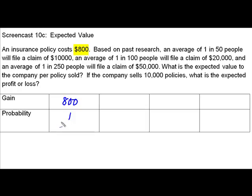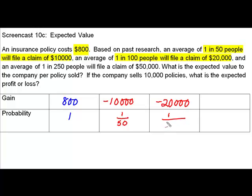Then we are going to move to what they have to pay out. The first scenario is that 1 in 50 people will file a claim of $10,000. Because that is a payout to the company, I will be writing that with a minus sign to show that it is something that is going to have to be paid out. It is not a gain, it is the opposite of a gain. The probability for that is 1 out of 50. The second payout amount is $20,000. The probability for that is 1 one-hundredth. The third scenario is that they are going to have to pay out $50,000. The probability for that is 1 two-hundred-fiftieth.